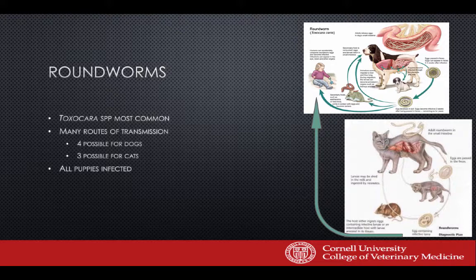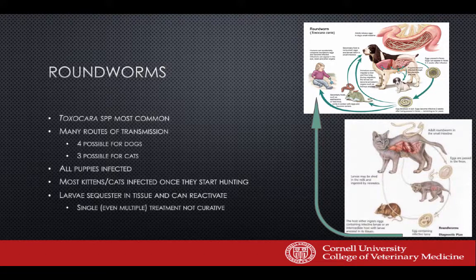As mentioned, all puppies are infected; most kittens get infected once they start eating prey, but they can also get it from mom or from eggs in the environment. A key point: animals will have larvae arrested in tissue — immature worms not in the intestine that are essentially dormant. When you treat an animal, drugs can remove adult populations in the intestine and some immatures, but not the ones that are dormant. There's always the possibility of leaving behind some worms, and the eggs are really long-lived.